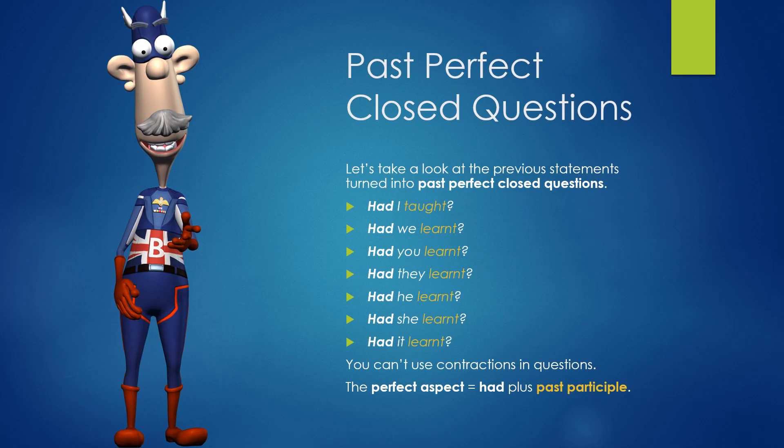Past Perfect Closed Questions. Let's take a look at the previous statements turned into past perfect closed questions. Had I taught? Had we learnt? Had you learnt? Had they learnt? Had he learnt? Had she learnt? Had it learnt? You can't use contractions in questions. The perfect aspect is had plus past participle.